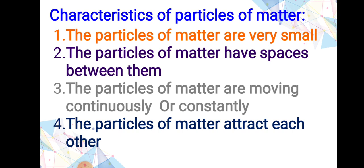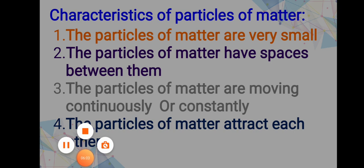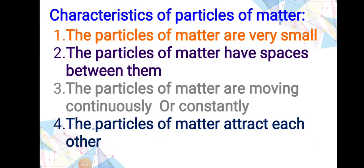From this video we come to know that matter is particulate, not continuous. If matter is made up of particles, then what are the characteristics of those particles? There are four characteristics. First, particles of matter are very small. Second, particles of matter have spaces between them. Third, particles of matter are moving continuously. And fourth, particles of matter attract each other.